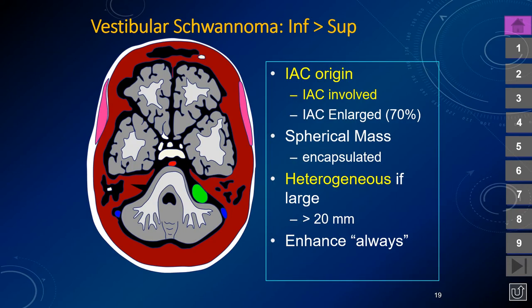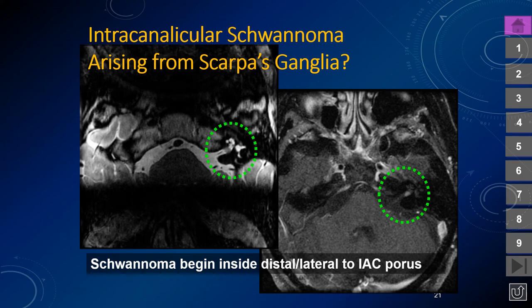Although we commonly illustrate the schwannoma as a rounded mass in the cerebellopontine angle cistern, the vestibular schwannoma always arises inside the IAC because the cisternal segment of the nerve has oligodendrocytes. Since the tumor arises from Schwann cells, it originates from the intracanalicular portion. Schwannomas tend to enhance very avidly; those smaller than 20 millimeters tend to be homogeneous, but older schwannomas undergo benign cystic degeneration and become heterogeneous. It has been suggested that schwannomas tend to arise from Scarpa's ganglion, a sensory ganglion for the cochlear portion of the eighth nerve.